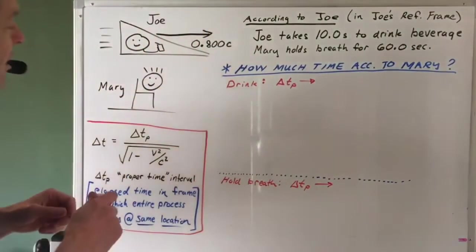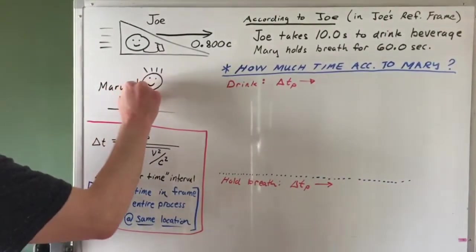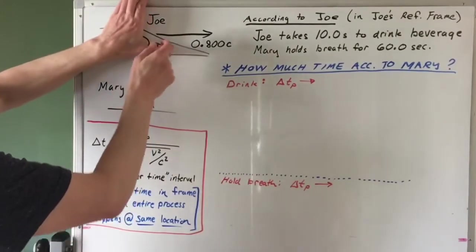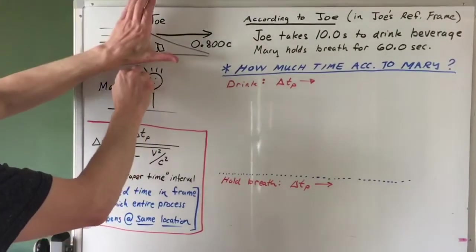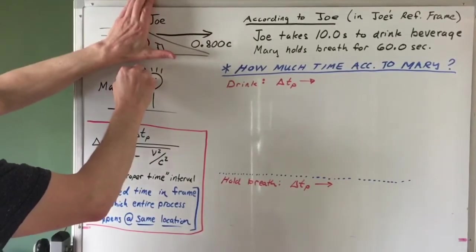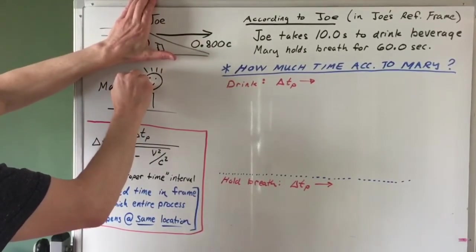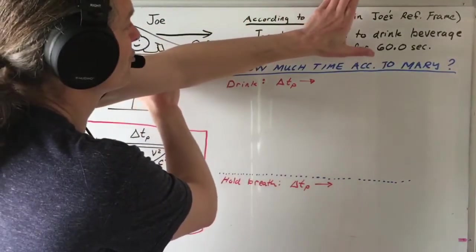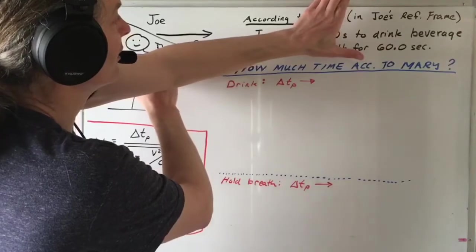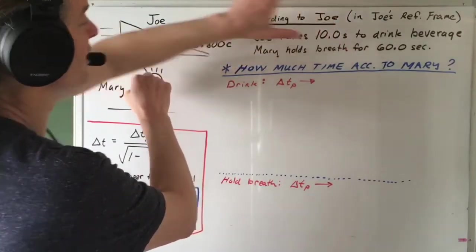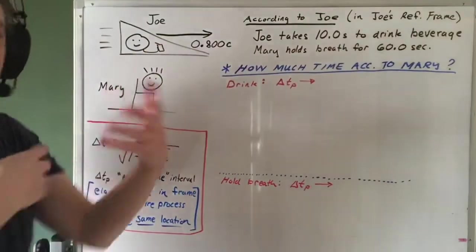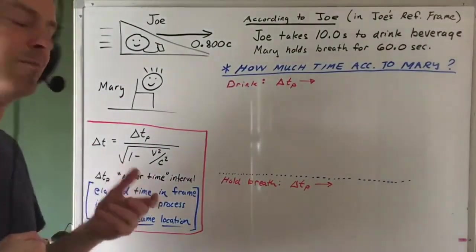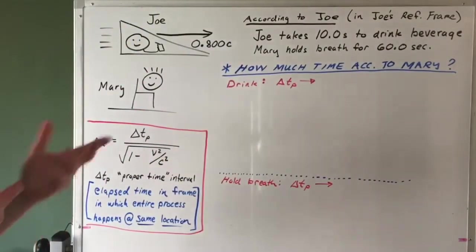Just to check, imagine from Mary's perspective. Mary's sitting right here and Joe's zooming by. The beginning of this process — where Joe first puts the beverage to his mouth — let's say that happens when Joe and Mary are at the same location. But meanwhile, Joe's moving to the right and continuing to drink, and Joe finishes drinking somewhere over here. Clearly the location of that process has been spread out. It doesn't all happen at the same location according to Mary. So Mary does not observe the so-called proper time for the drinking process.